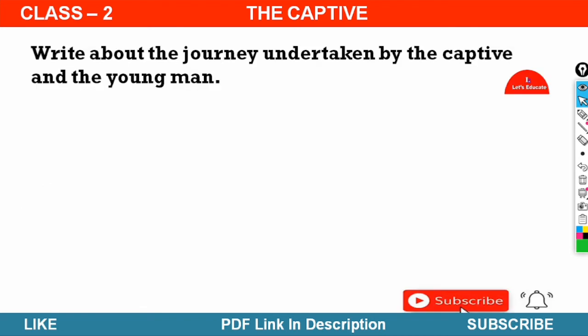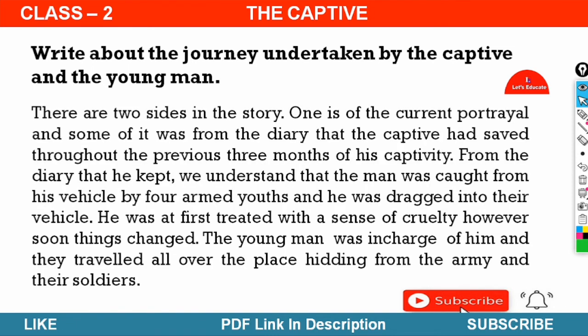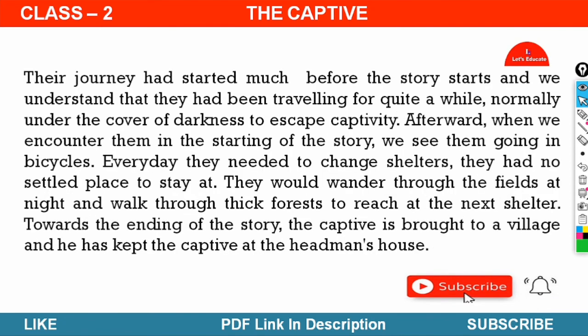Next question: Write about the journey undertaken by the captive and the young man. There are two sides of the story — one is the current portrayal and some of it was from the diary that the captive had kept throughout the previous three months of his captivity. From the diary, we understand that the man was caught from his vehicle by four armed youths and dragged into their vehicle. He was at first treated with cruelty. However, soon things changed. The young man was put in charge of him and they traveled all over the place, hiding from the army and their soldiers. Their journey had started much before the story begins and we understand they had been traveling for quite a while, normally under the cover of darkness, to escape detection.